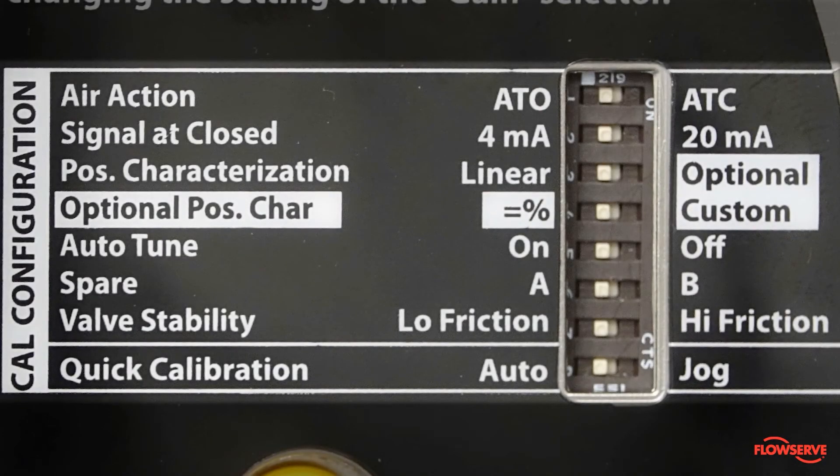Keeping this in mind, the first dip switch is called air action, which will tell the positioner whether your valve is air to open or air to close. For this example, the valve is set air to open with the white dip switch set to the left.